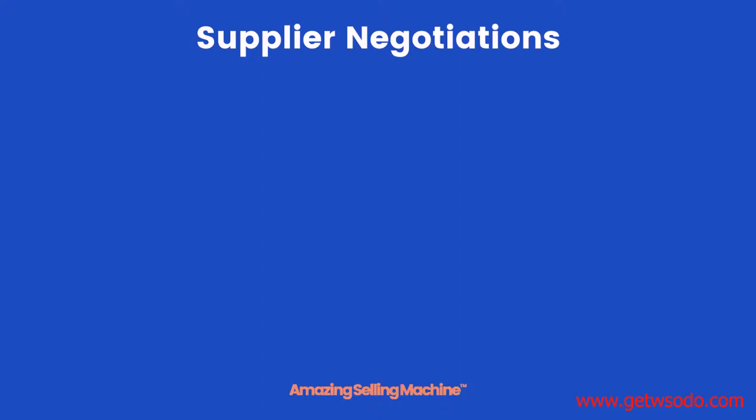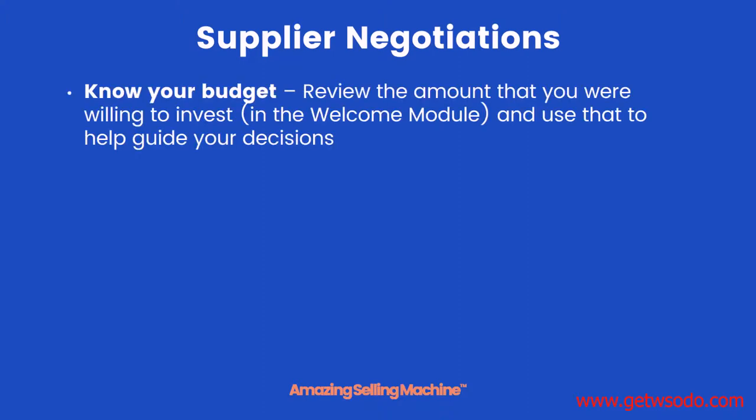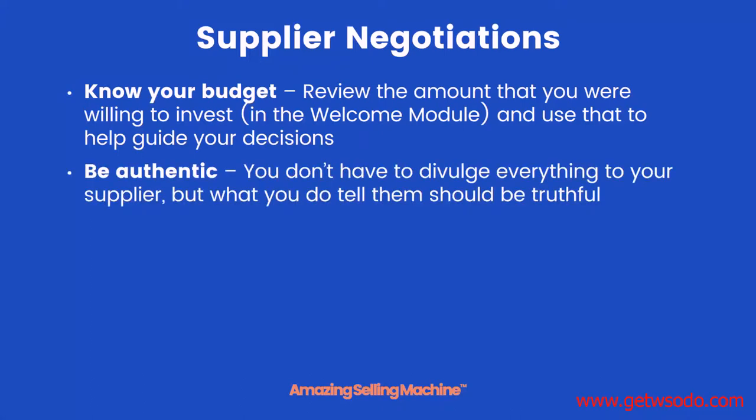Topics such as price and quantity may come up, and if you do get involved in those conversations, here are some things to keep in mind. Remember your budget — review the amount that you were willing to invest back in the welcome module and always keep that in mind to help guide your decisions. Always be authentic; you don't have to divulge everything to your supplier, such as the fact that this might be your first product you've ever sourced, but whatever you do share with them, make sure it's always truthful.